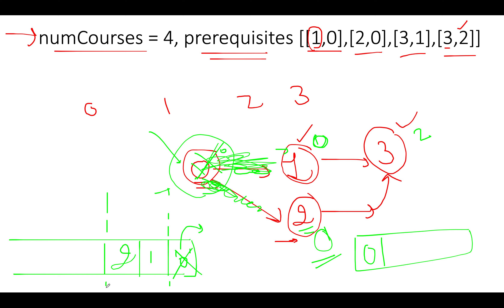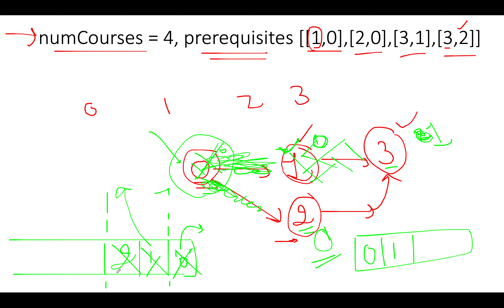We continue the BFS. We pull out node 1 from the queue and add it to the result. Since we've completed course 1, we delete its outgoing edge. We reduce the indegree of node 3 by 1, but since the indegree of node 3 is now 1 — still greater than zero — we do not add it to the queue yet.